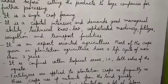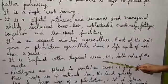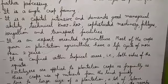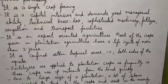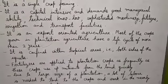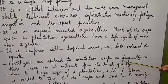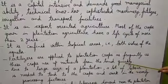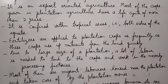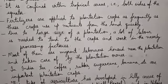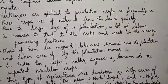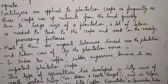The maturity time for plantation crops is quite high. Plantation agriculture is confined to tropical areas — that is, both sides of the equator — as it is generally successful in tropical areas close to the equator. Due to the large size of a plantation, a lot of labor is needed to tend to the crops and work in the nearby processing factories.